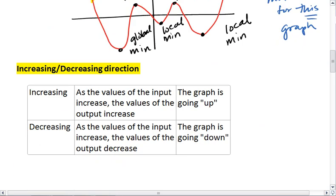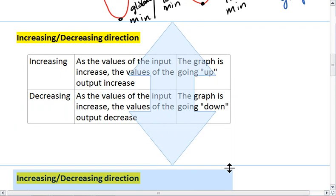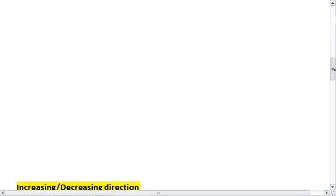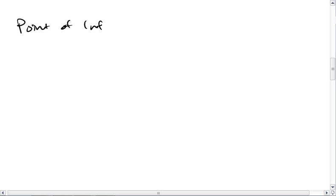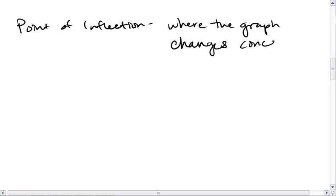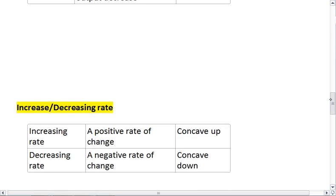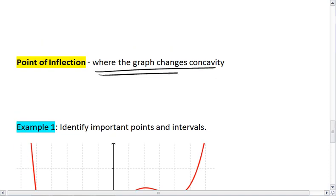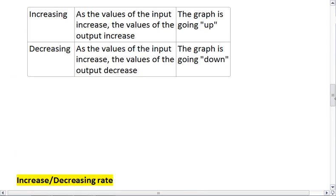The third point I want to talk about is a point of inflection, and a point of inflection is where the graph changes concavity. So there are a couple of things I want to talk about before we talk about what exactly concavity is.